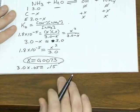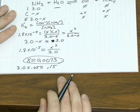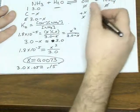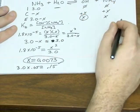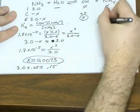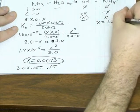So here, x equals 0.0073. But remember, we're dealing with a base. So x here isn't the hydronium concentration. X is equal to the hydroxide concentration.